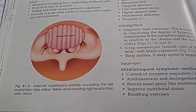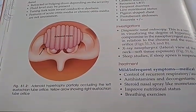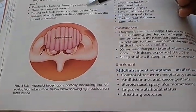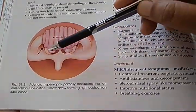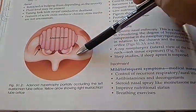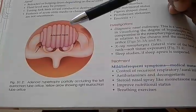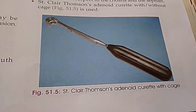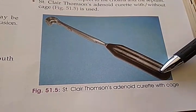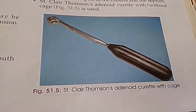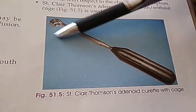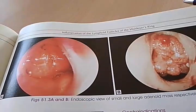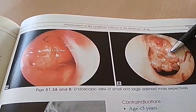Adenoid hypertrophy partially occluding the left eustachian tube orifice. There is only one adenoid mass, but there are two eustachian tube openings which are being partially blocked. This is a St. Claire Thompson's adenoid curette with cage. Endoscopic view showing small and large adenoid mass respectively.